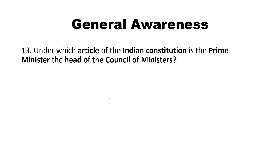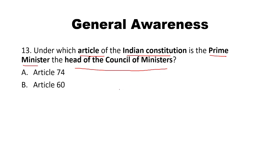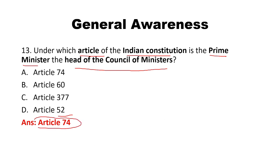Under which article of the Indian Constitution is the Prime Minister the head of the Council of Ministers? Options: Article 74, Article 60, Article 377, Article 52. The answer is Article 74. Under Article 74, the Prime Minister is the head of the Council of Ministers.